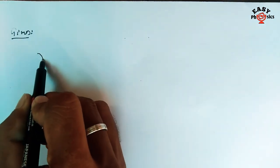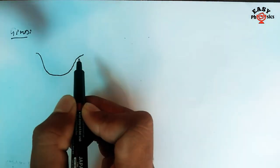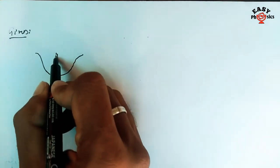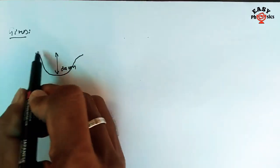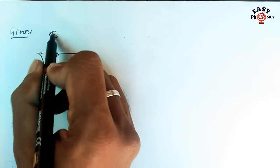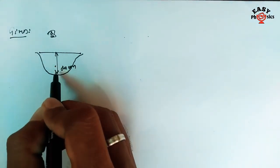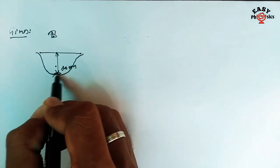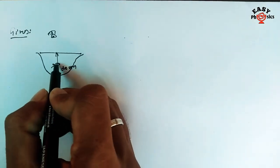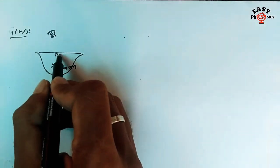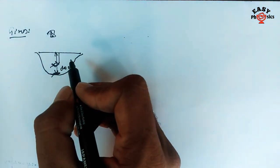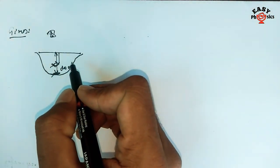Let's consider a pond. The depth of this pond is 20 cm. Now, there is a fish in the pond. If you look at the fish, the distance appears a little different due to refraction. Here is the difference — we call this the apparent depth.